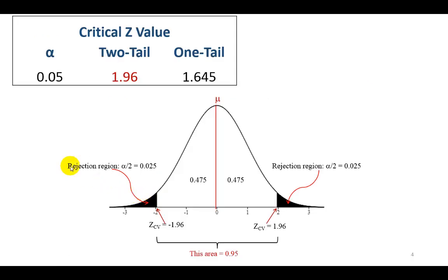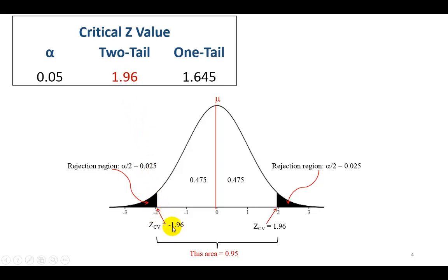For example, let's say we choose to conduct the test of hypothesis using the 95% confidence level. A 95% confidence level translates to alpha of 5%, which is the same as 0.05. On a two-tail test, each tail would be 0.025 and the other side would be 0.025. We find that the z-value corresponding to this test would be 1.96. So negative 1.96, since it's below the mean of the standard normal variable, would be positioned on the left, and positive 1.96 on the right.